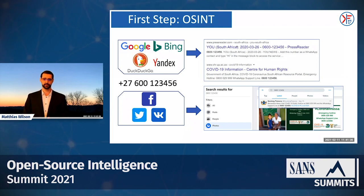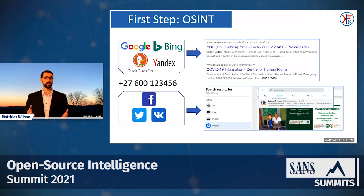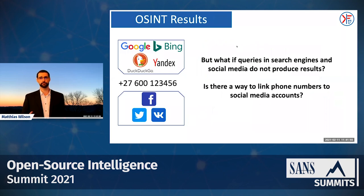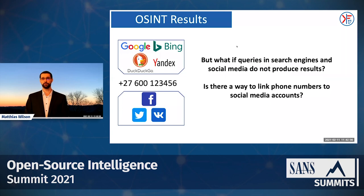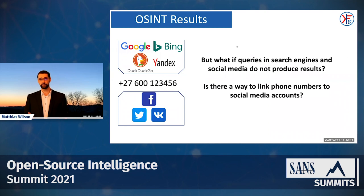What would happen if we have a private phone number? In many cases we would come up with nothing — neither on Facebook or any other social media, nor on Google or any other search engines. Does our OSINT work stop the moment we don't find anything with these tools? Of course not. We can take this phone number and put it into paid databases to see what they come back with, or we can do something I'm about to show you.